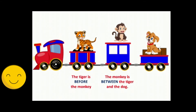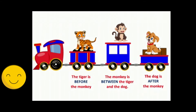Where is the dog? The dog is after the monkey. In this way, we will learn about numbers — the numbers that come before, between and after.